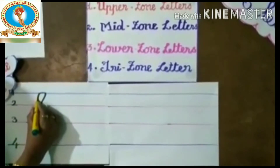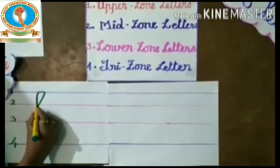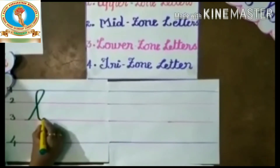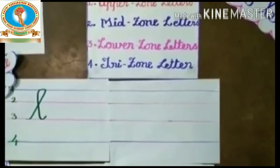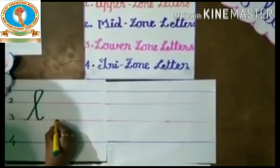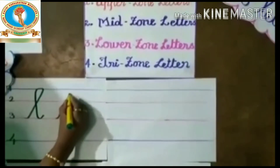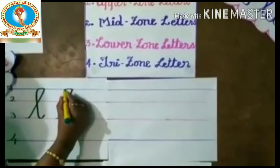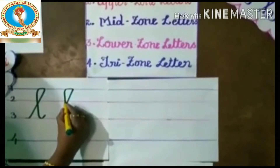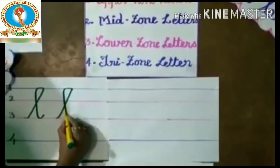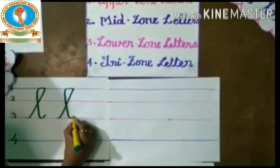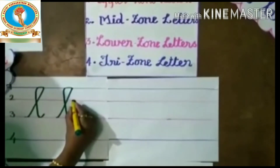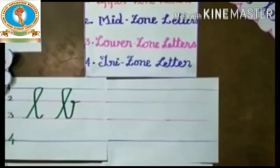Come down. Cutting point in the second line. Again come down to the third line. Small curve. Alphabets start from the third line, go up to the first line, and the cutting point is in the second line. Come down to the third line, go up to the second line, and small curve. B.